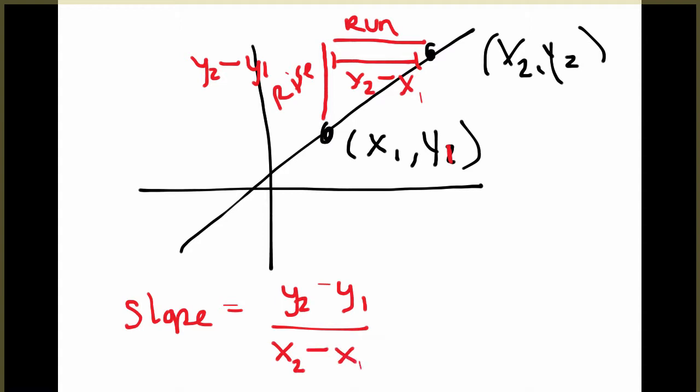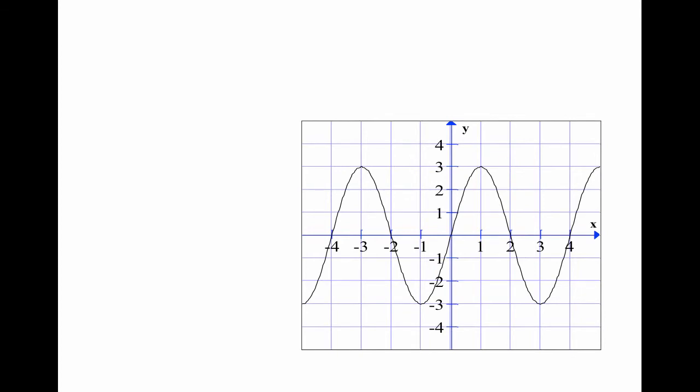Now today we're essentially going to be doing the same thing, except instead of just finding the slope, we're going to look at how you can find the slope when it is a non-linear function. So rather than having a line, you can find what's called the average rate of change of a function when it's not just a line. But you can use that same idea.